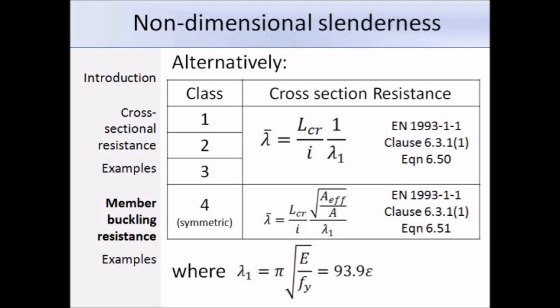Basically we have the slenderness from 5950 divided by the term lambda 1. Lambda 1 is defined as pi times the square root of Young's modulus over the yield strength, and that's also equal to 93.9 epsilon. This is just another method we can use to work out the non-dimensional slenderness.